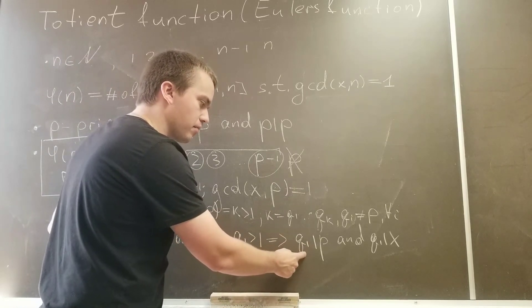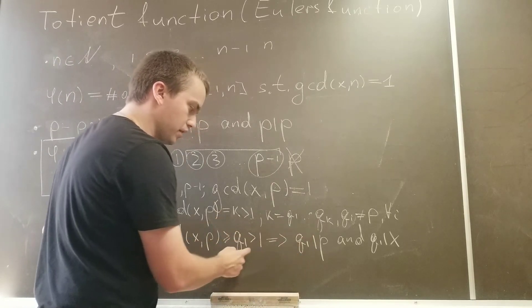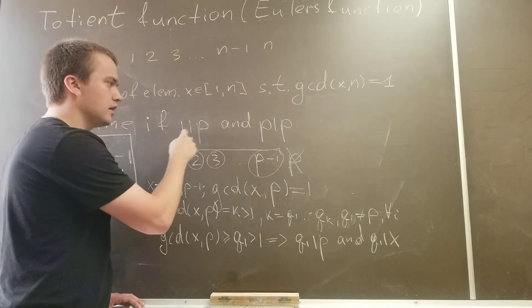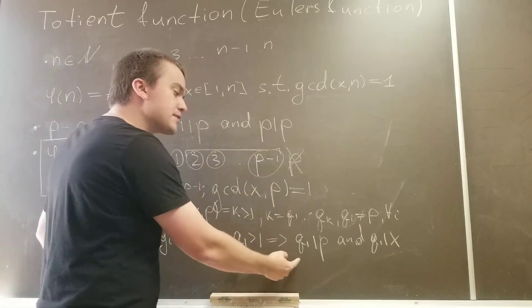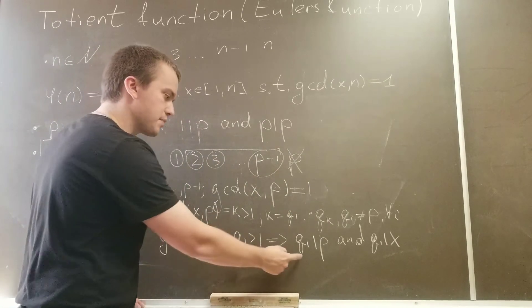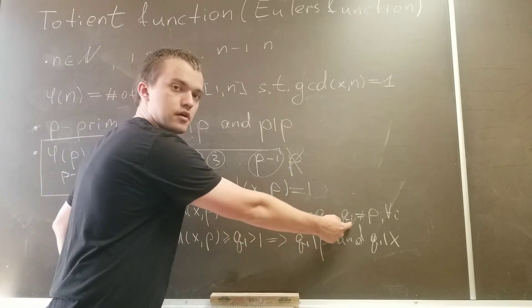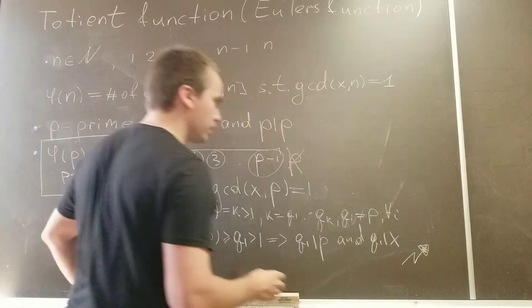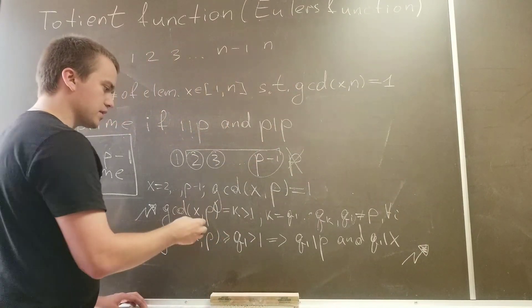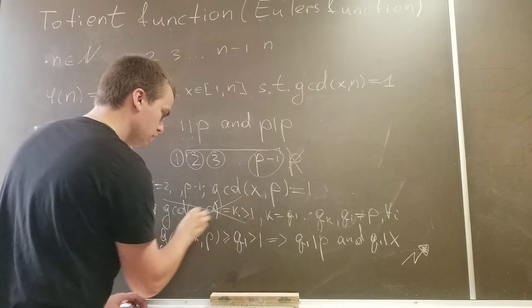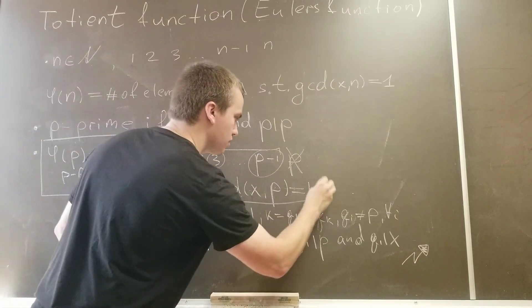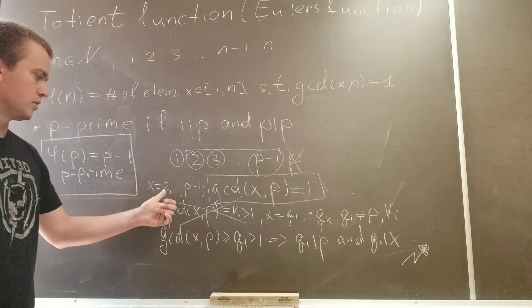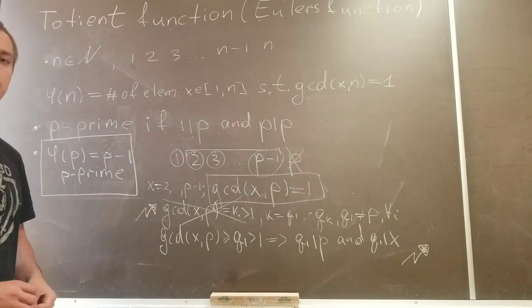Because we found some prime number that's bigger than 1 and that divides p, but p has only 2 divisors, 1 and itself. And this prime number is not 1 and this prime number does not equal to p, and it divides p, so it's a contradiction. So if we got contradiction, it means our assumption this one is false, so this assumption must be true. So gcd of x and p equals to 1 when x is between 2 and p minus 1.